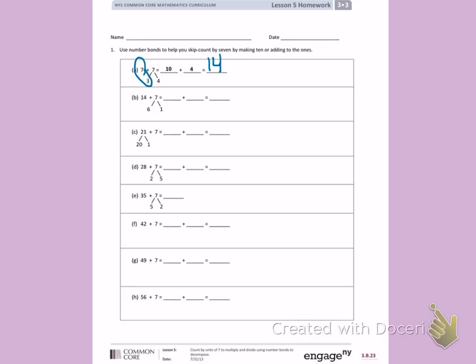Letter B. 7 has been decomposed into 6 and 1. I'm going to put 14 and 6 together to give me 20, plus 1 more, which equals 21.